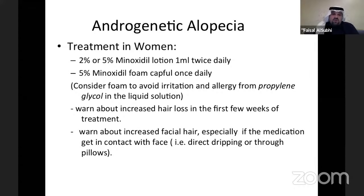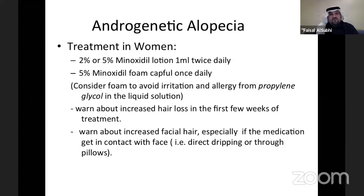Treatment for women: the FDA-approved treatment is minoxidil — 2% or 5%, with 5% working much better, especially the foam, to avoid irritation and allergic contact dermatitis from propylene glycol. Always warn patients they may experience increased hair loss in the first few weeks of treatment — this is because telogen hair falls out early while new anagen hair grows. Warn them about the risk of increased facial hair, especially if the solution contacts the face. The 5% for women is applied once daily.